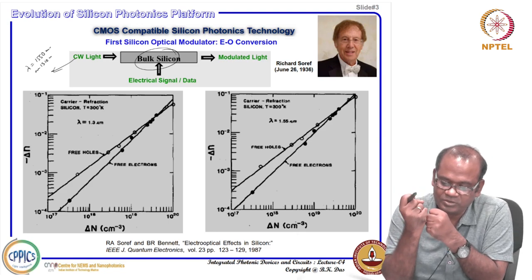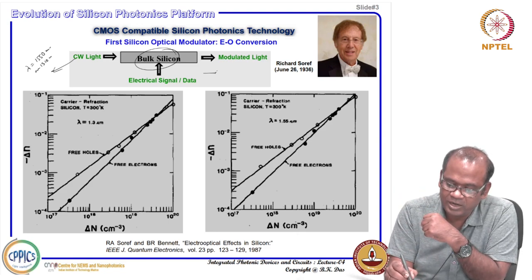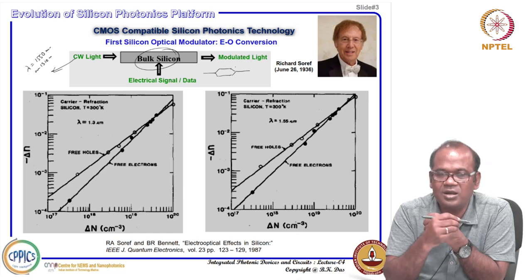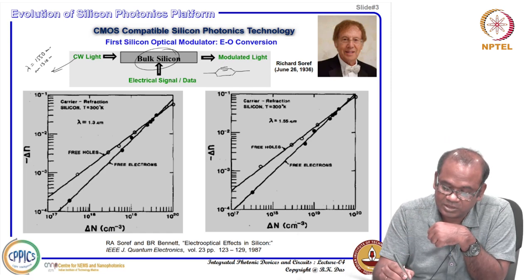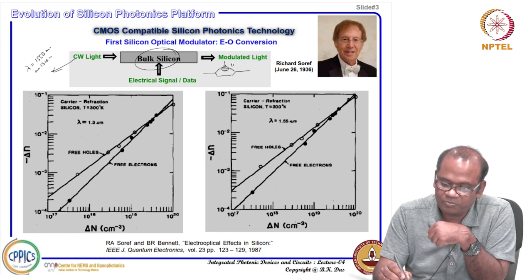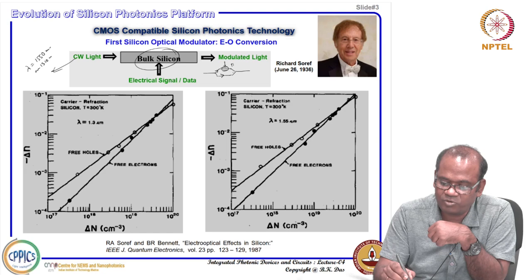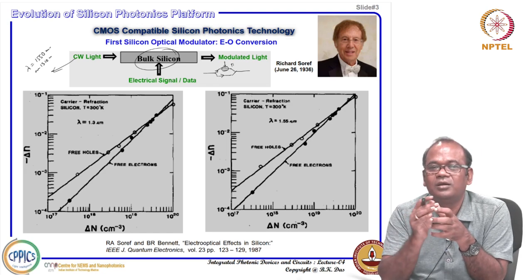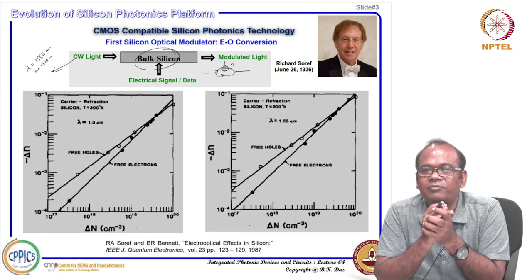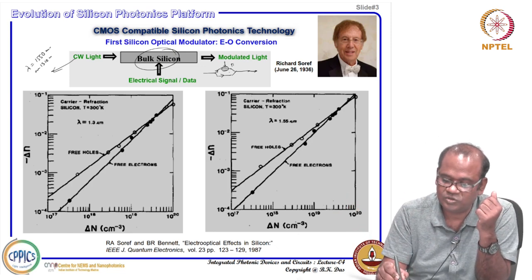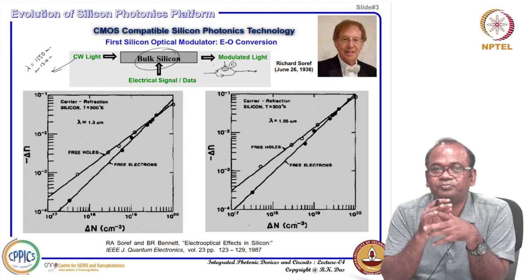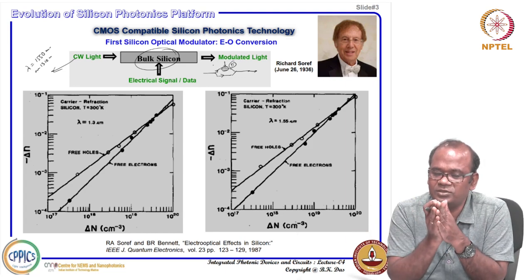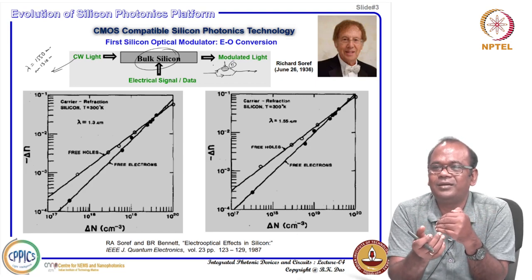If you have a phase modulator, you can split the input waveguide into two halves and recombine them — this is called a Mach-Zehnder interferometer. If you apply a pi phase shift to one arm via an electrical signal, the two halves create destructive interference when recombined, giving no light output. Withdrawing the phase shift makes them constructive. In this way, you can convert electrical data into optical data.